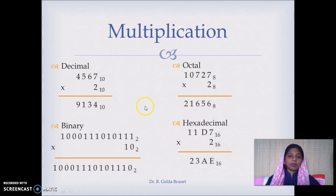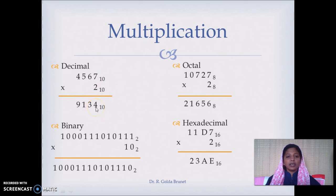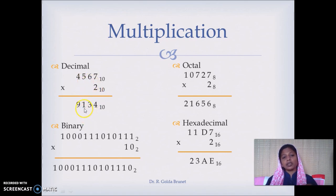For multiplication, a simple doubling example is used. In decimal: 7 times 2 is 14, carry 1. 6 times 2 is 12 plus 1 is 13, write 3 and carry 1. 5 times 2 is 10 plus 1 is 11, carry 1. 4 times 2 is 8 plus 1 is 9.